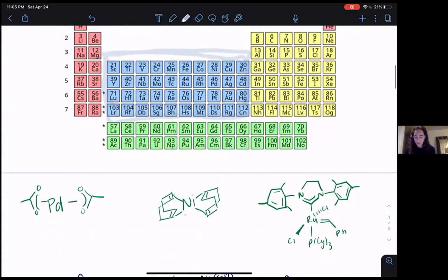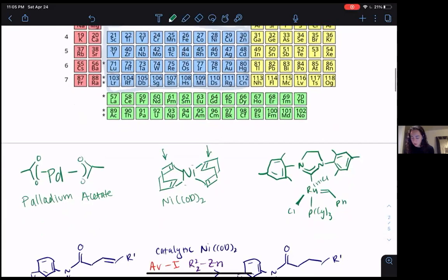Some catalysts that my lab uses are seen here. The first one on the left is palladium acetate. This middle one is nickel cod, where cod stands for cyclooctadiene, which are these here. And on the right, we have a ruthenium catalyst, which is called a Grubbs second generation catalyst.